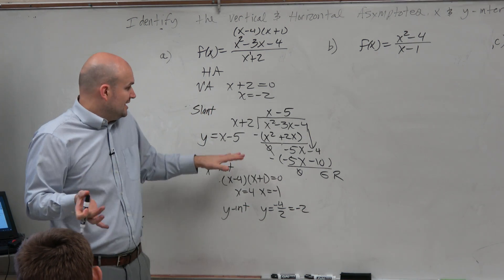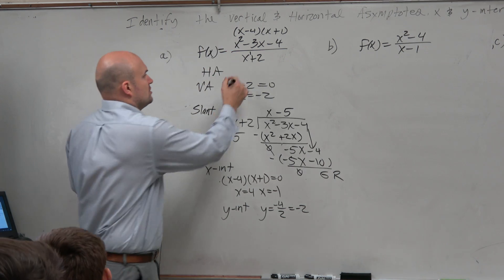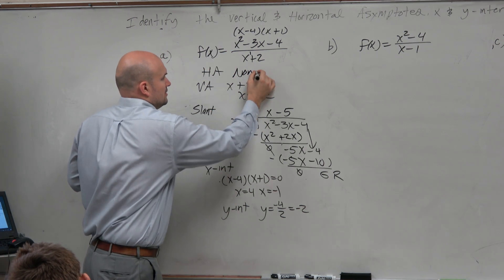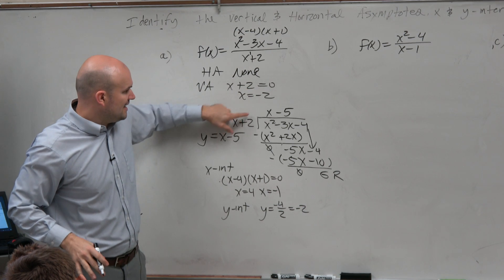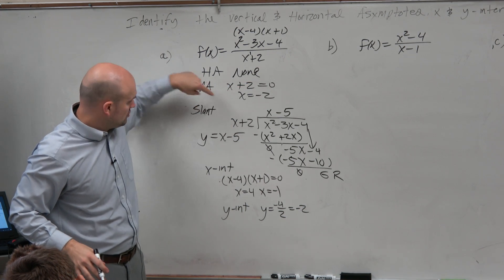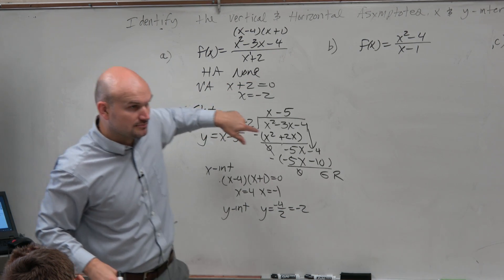So the only difference here is you now, since you have no horizontal asymptote, you are going to divide. And the quotient, y equals quotient, is your slant asymptote. OK? Question?